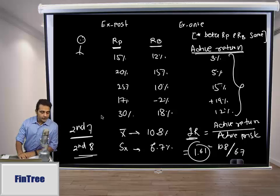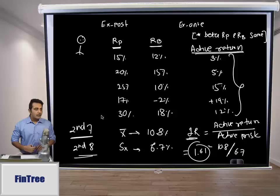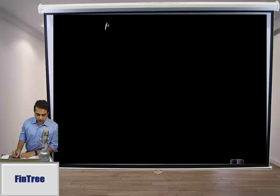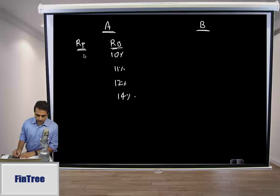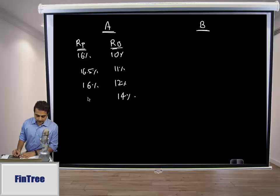Why do we need to calculate a ratio like this? Consider two fund managers, A and B. The benchmark returns are 10%, 11%, 12%, and 14%. Manager A's portfolio returns are 16%, 16.5%, 16%, and 20%, giving active returns of 6%, 5.5%, 4%, and 6%.